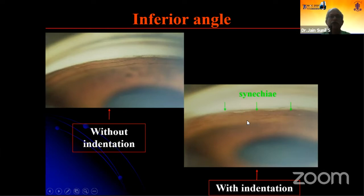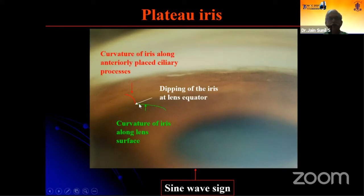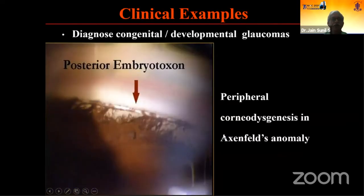This demonstrates the importance of indentation gonioscopy. After you have done an iridotomy and overcome the pupillary block, you will likely see the sine wave sign, which indicates a plateau iris configuration.